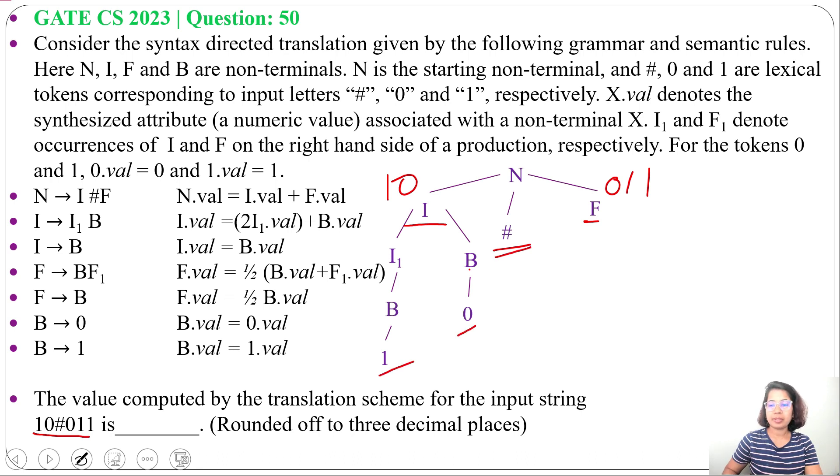We just need to derive 0, 1, 1. From F, we can derive B F1. Then, from this B, we will derive 0. Now, from this F1, we need to derive 1, 1. So, from F1, we will derive B F1. Then, from this B, 1. Then, from this F1, B. Then, from B, 1.